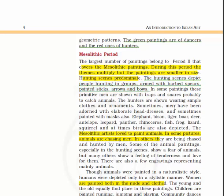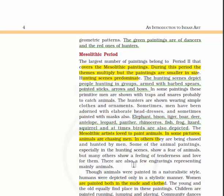In some paintings, primitive men are shown with traps and snares to catch animals. Hunters are shown wearing simple clothes and ornaments, and sometimes men are adorned with elaborate headdresses or painted with masks. Elephants, bison, tiger, boar, deer, antelopes, leopard, panther, rhinoceros, fish, frogs, lizard, squirrels and at times birds are also depicted. The Mesolithic artists loved to paint animals.